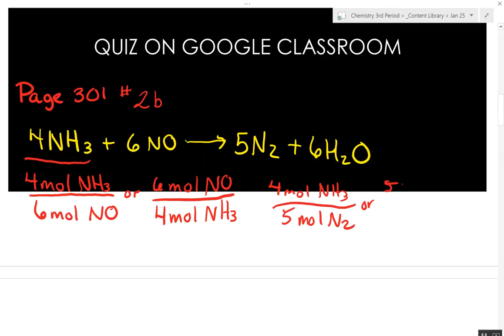Or what can I do with this ratio? Right. 5 moles of N2 over 4 moles of NH3. These ones with 4 different elements in it get fairly long.